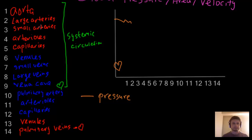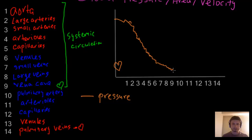By the time the blood reaches the small arteries it's already pretty low. Once it reaches the capillaries — number five — pressure is really, really low. It keeps dropping through the venules and veins until it reaches the vena cava, number nine, where pressure is at its lowest. From the vena cava it goes back into the heart and rises again, but not by as much.